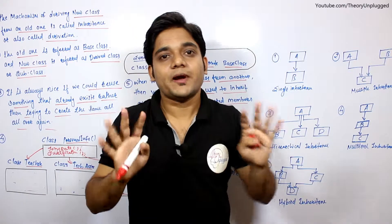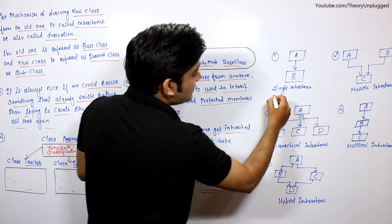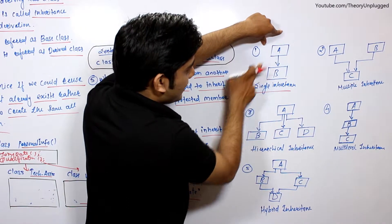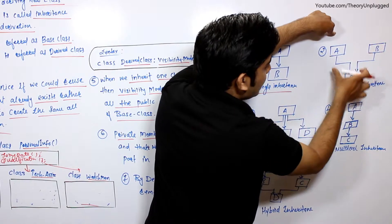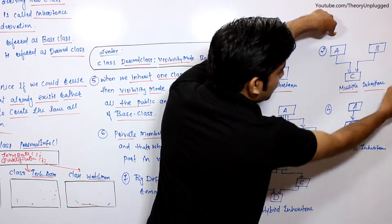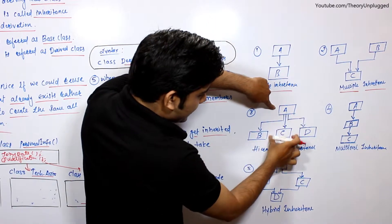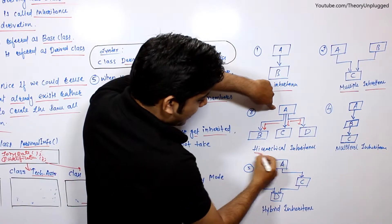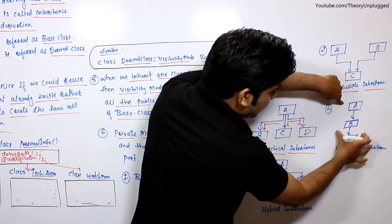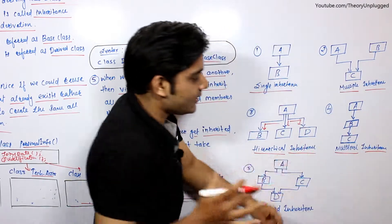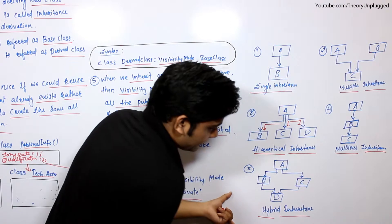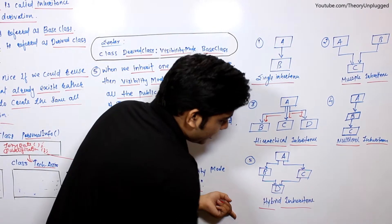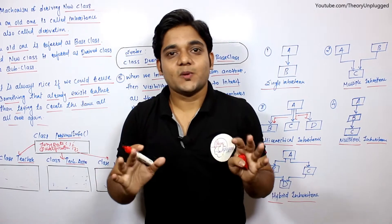Generally, inheritance has five types. First is single inheritance — A from B. Second, A and B both into C — that is multiple inheritance. Third, A class B, A class C, A class D — that is hierarchical inheritance. Fourth, A class B class C — that is multilevel inheritance. And last, hybrid inheritance combining the above. So that's all about inheritance.